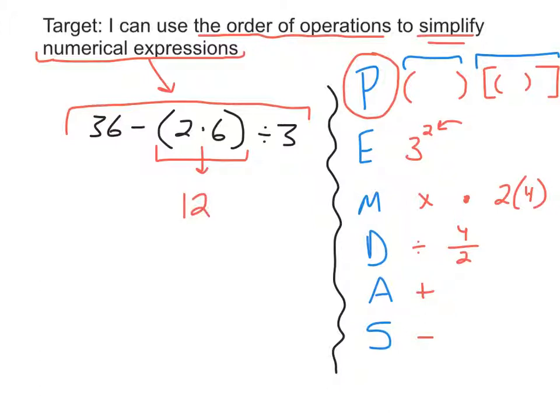I'm going to rewrite the whole expression. So now it's 36 minus 12 divided by 3. Now I have two more operations. I do not have any exponents — there are no powers. So I can keep moving on in PEMDAS.